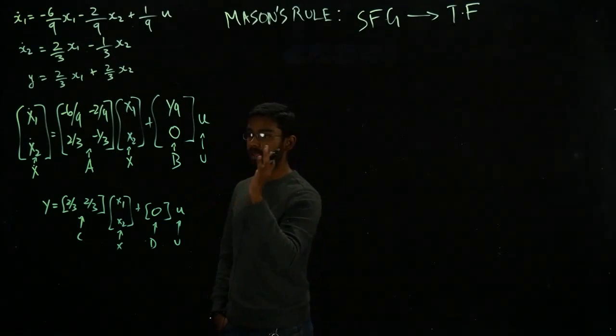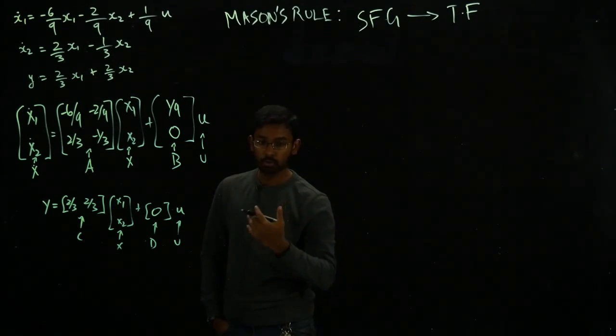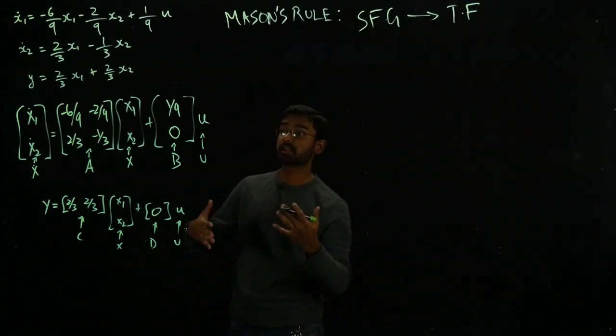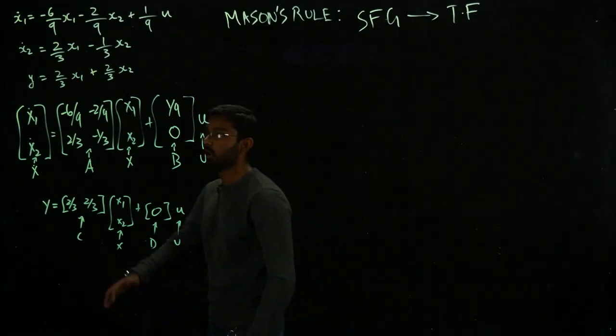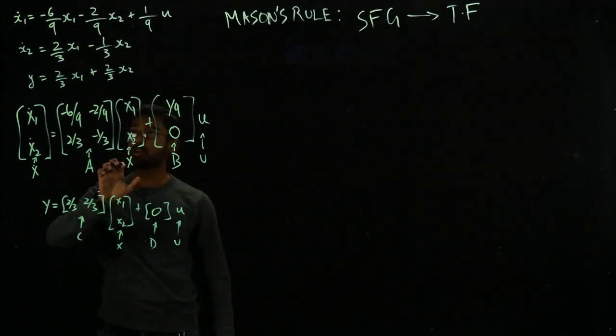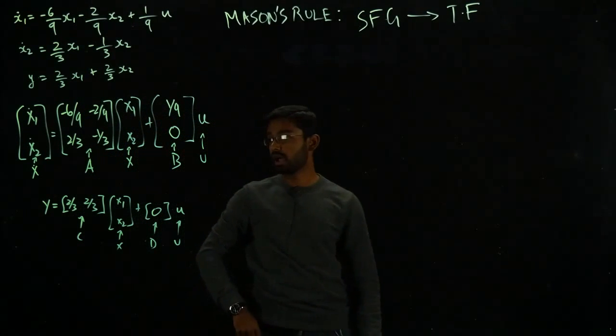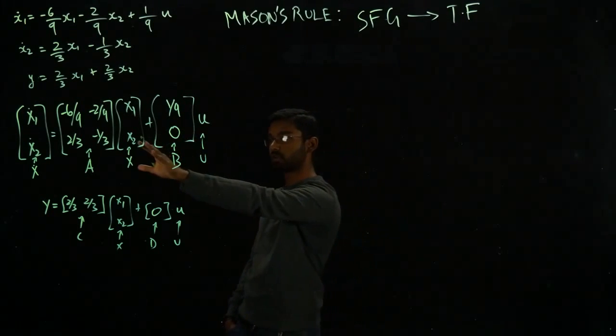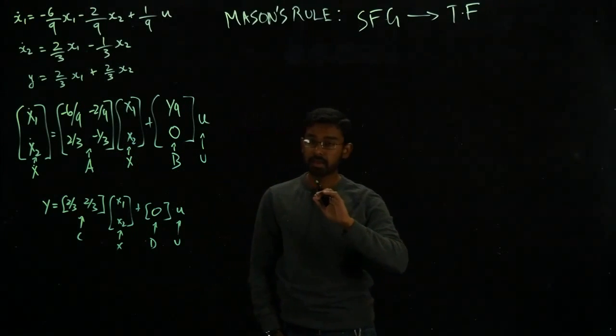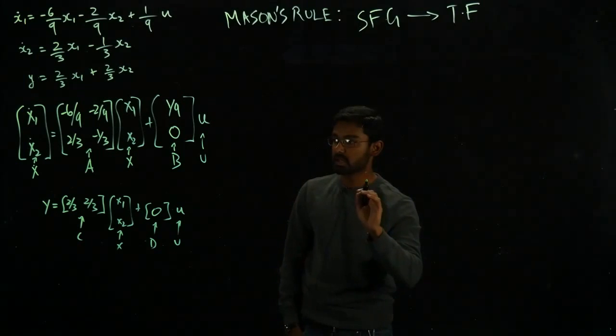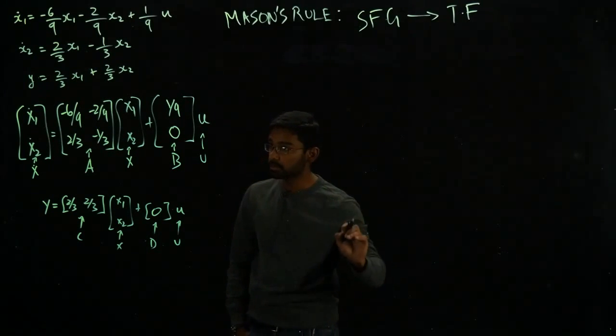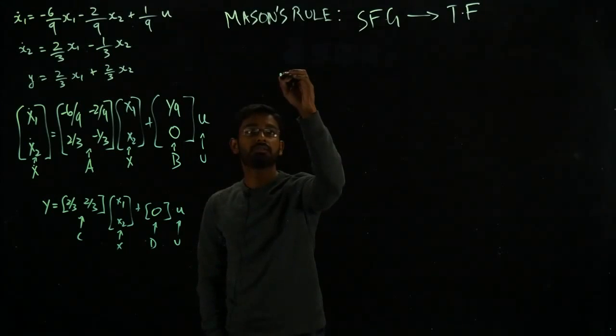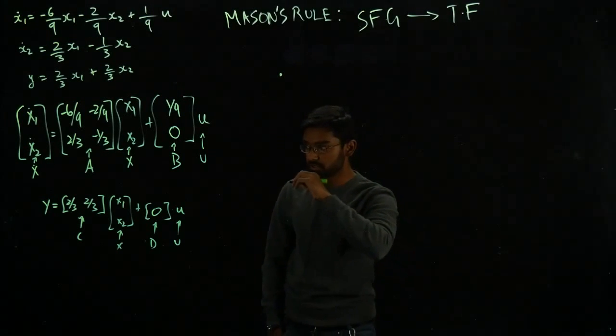I am going to represent these set of equations in terms of a signal flow graph. What is a signal flow graph? I am going to have individual components from the state space equation and I am going to represent it as a graph where I talk about the relationship between each element. This is one representation where we will start with signal flow graph.